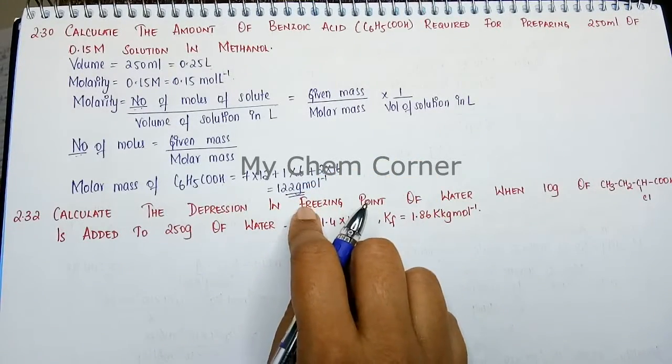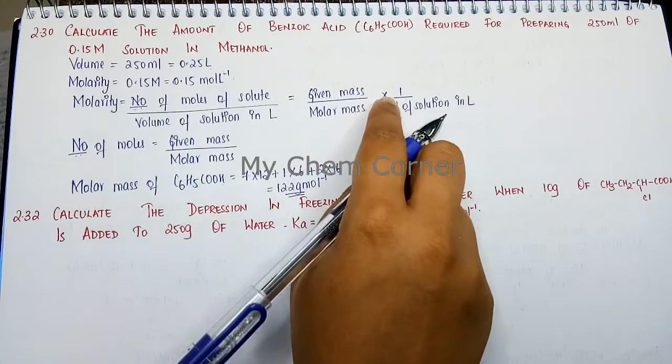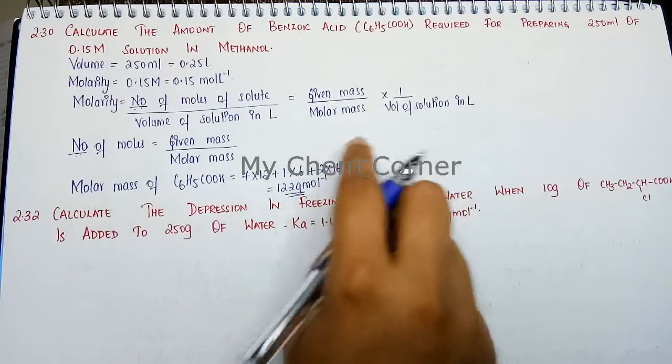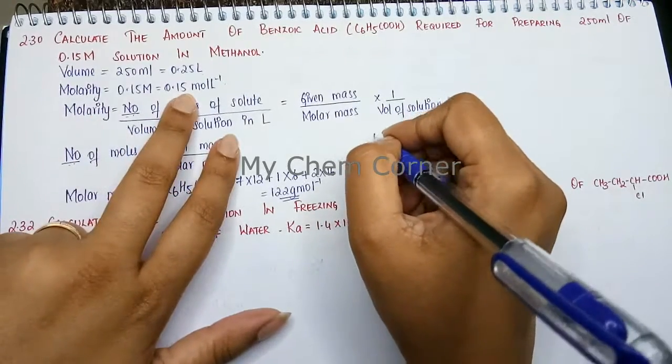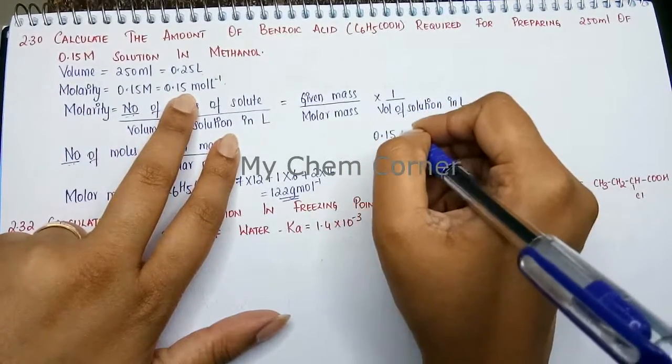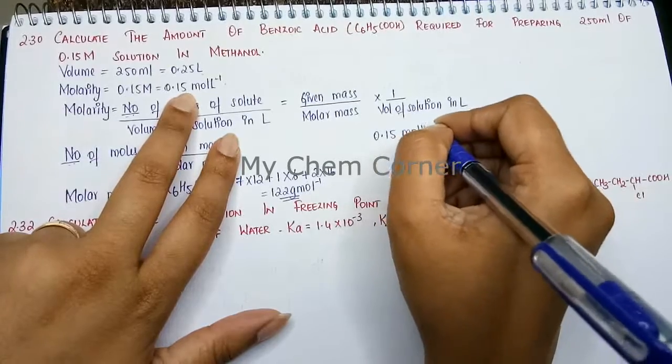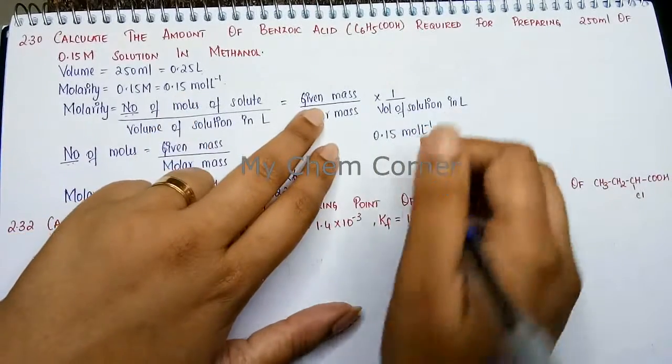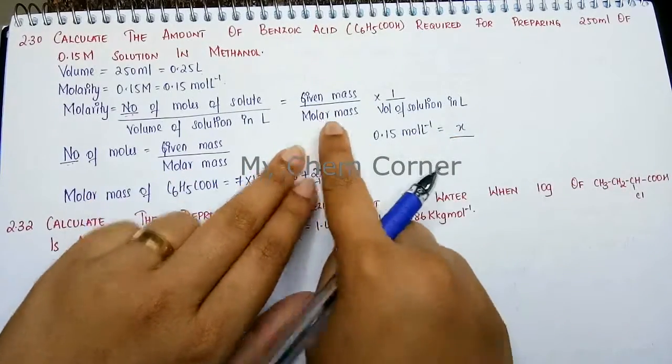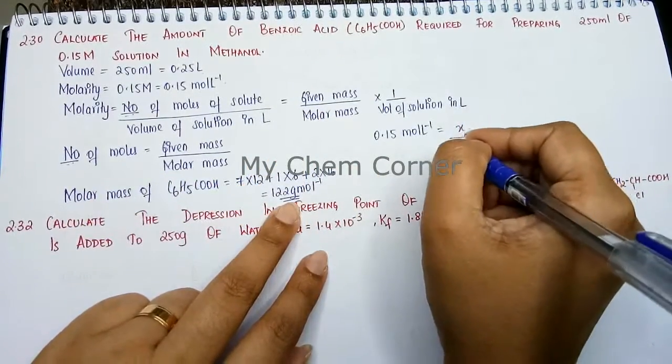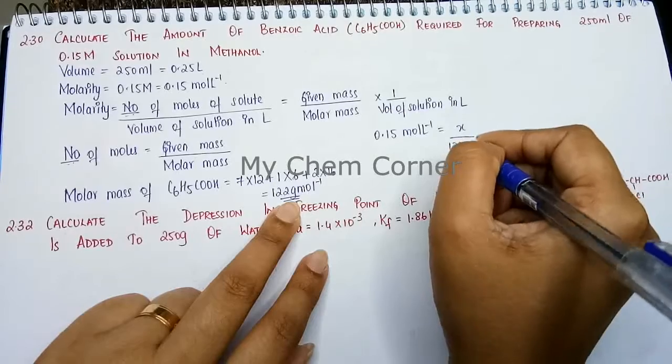Now that we have the molar mass, we can substitute all values into the formula. Molarity is 0.15 mole per liter. Given mass we'll call x, since that's what we need to calculate. Molar mass is 122 grams per mole.